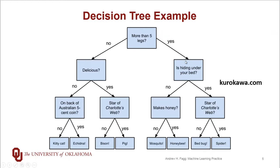Let's consider the case where we fall down the yes branch. Then we get to ask another question: is the thing hiding under your bed? Let's assume we fall down the no branch, at which point we get to ask yet another question: does it make honey? Assuming the answer is yes, we fall down into what's called a leaf node, and it's the leaf node that makes the prediction. The prediction here is a particular class label — honeybee. Depending upon the sequence of answers to the questions, we'll fall down to other leaf nodes.